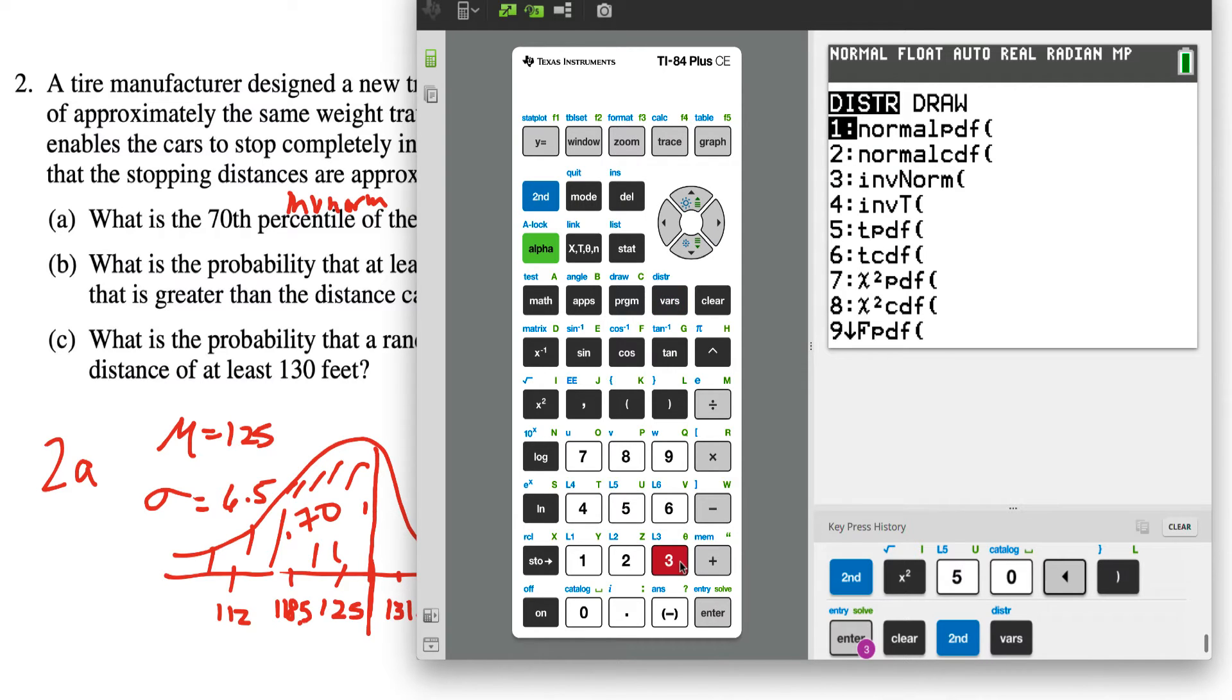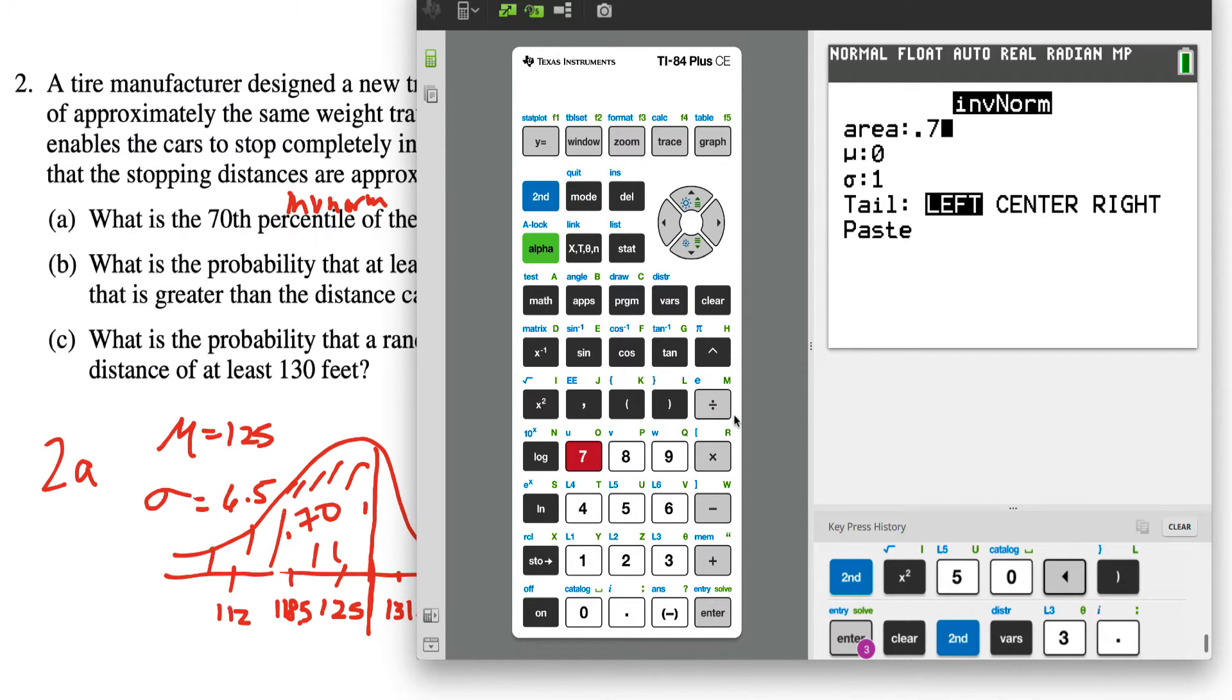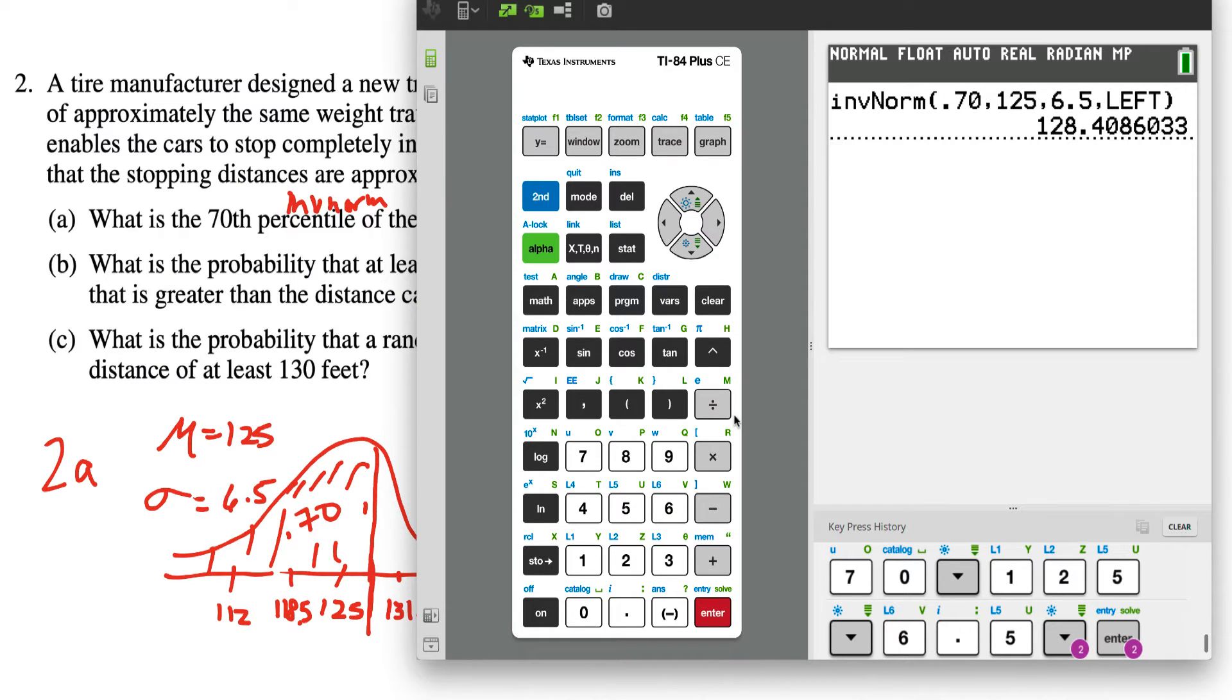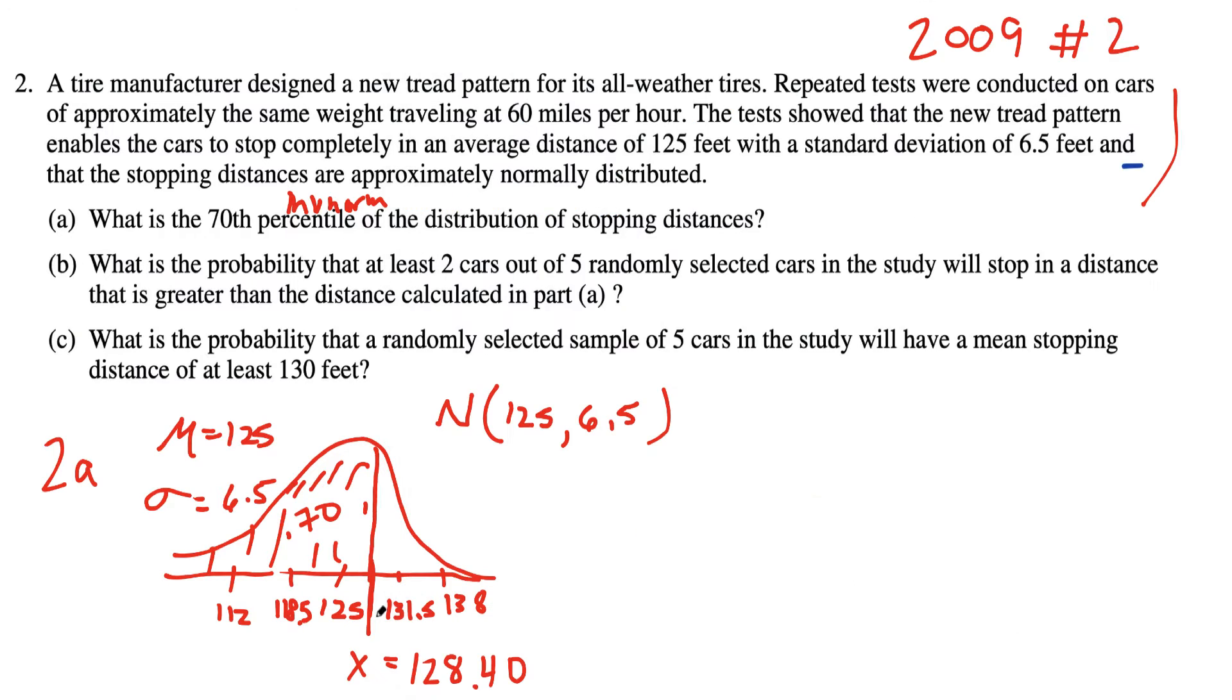We go to distribution. Inverse norm is choice three. The area is 0.70. Mean is 125. The standard deviation is 6.5. So our answer for that, 128.40. So I would actually write out the 70th percentile is approximately 128.4 feet. And that answer is part A.